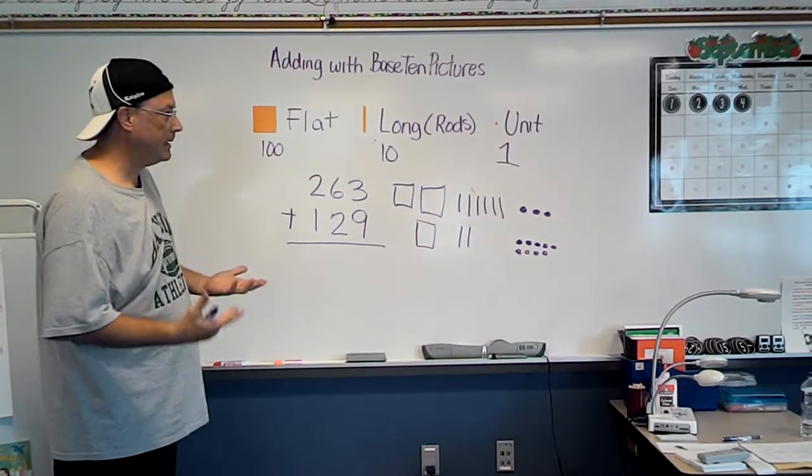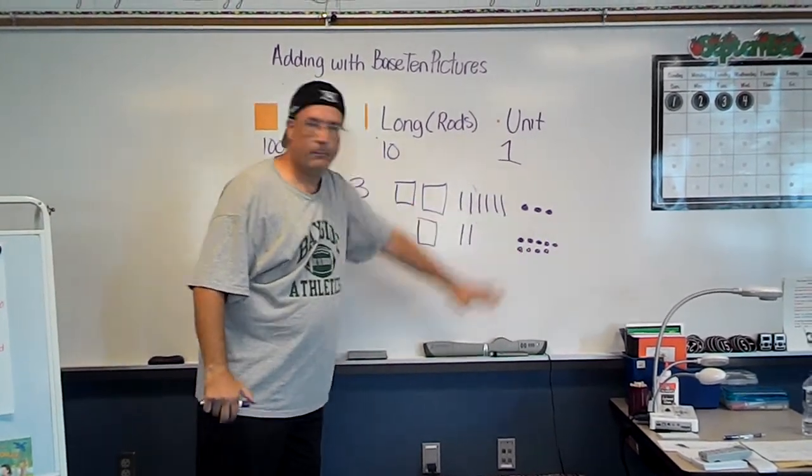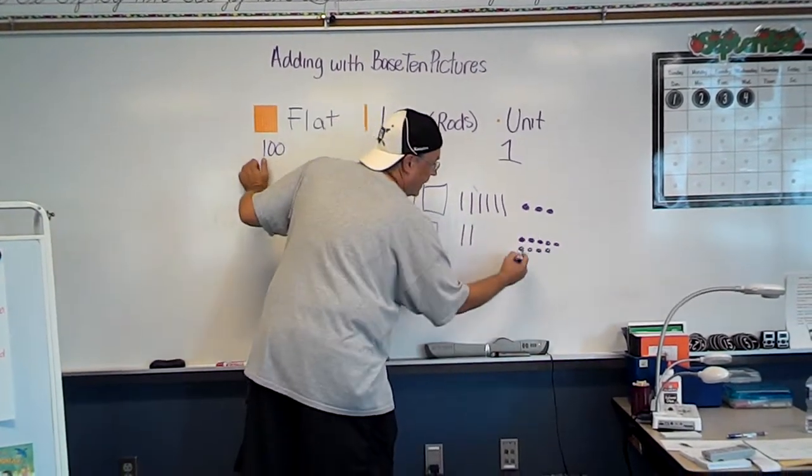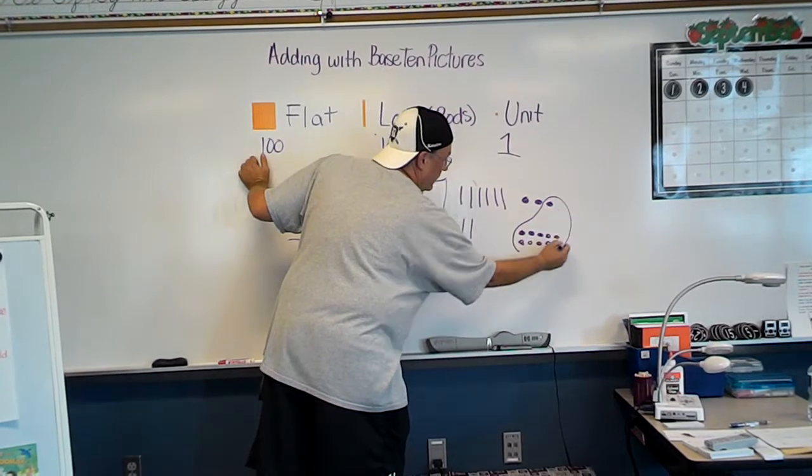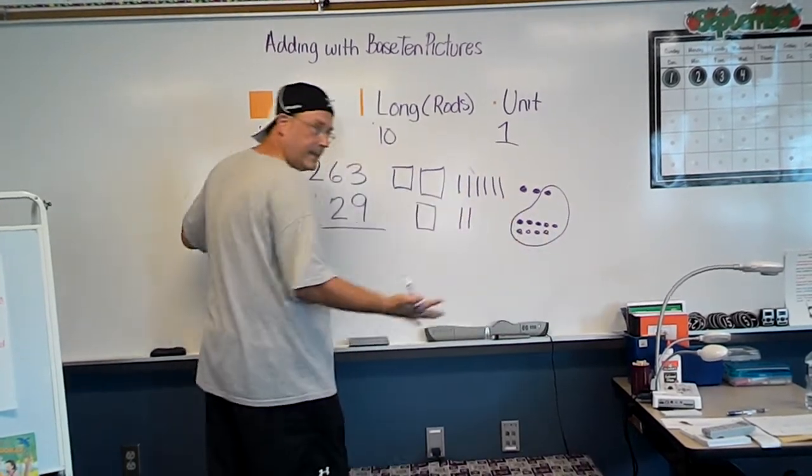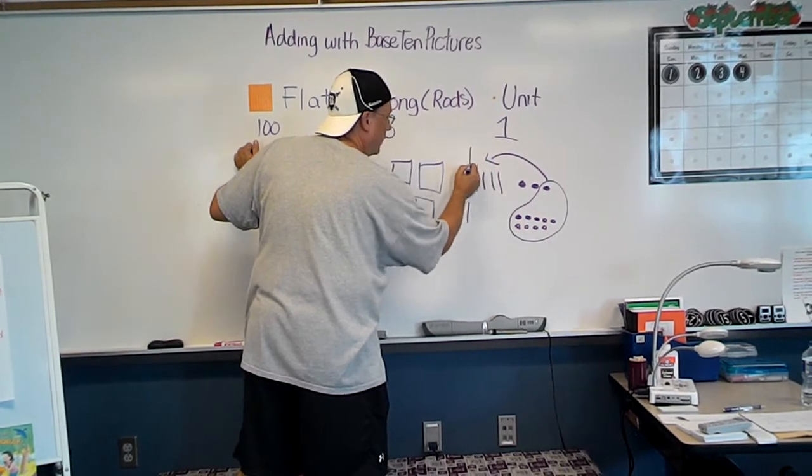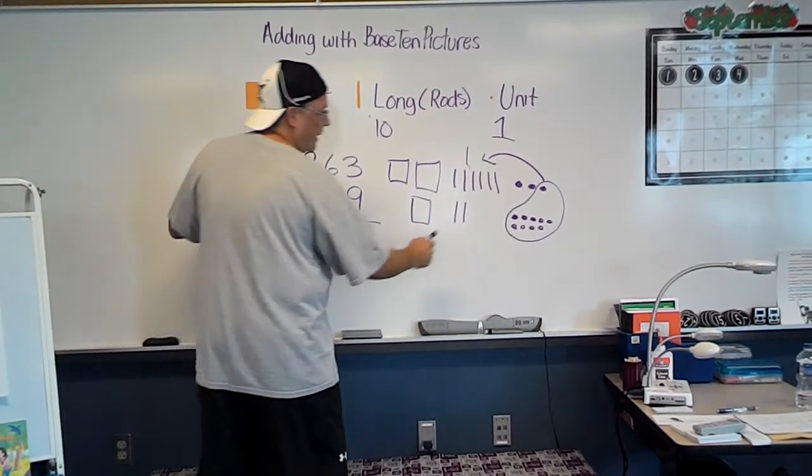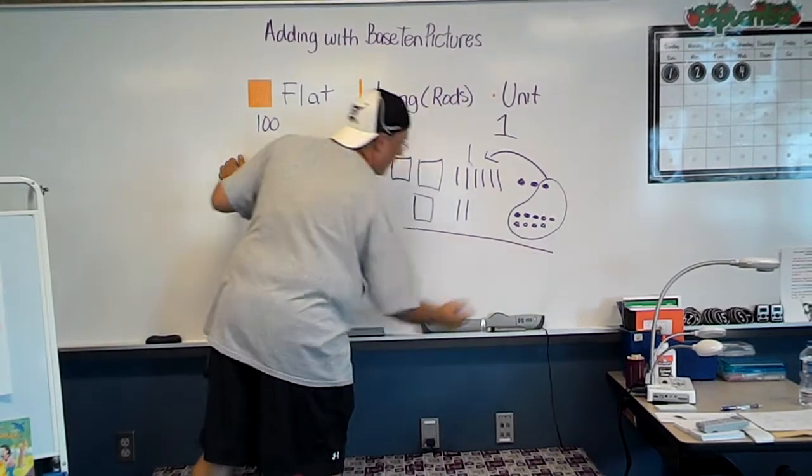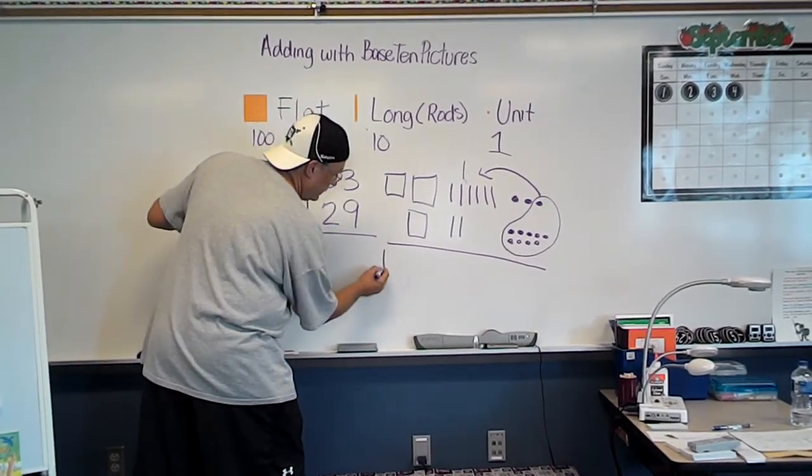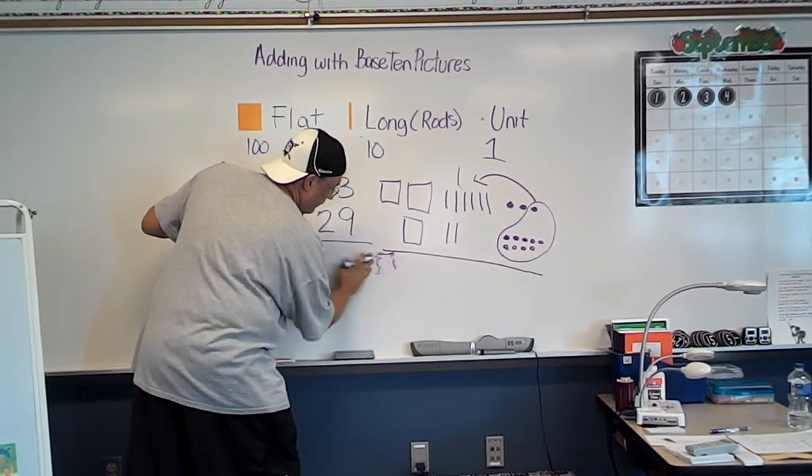Just like I did before, I noticed that I have more than 10 ones. I can regroup them. So I know that's a 9. So if I do that, that makes a 10 or a long. I'm going to bring it over to remind myself that I brought it over there. And then I'm going to add up. I've got my 3 flats. Not a very good picture.